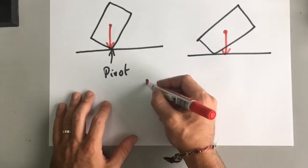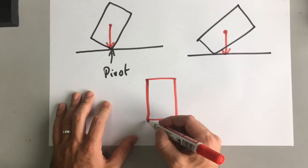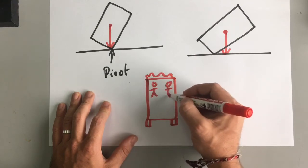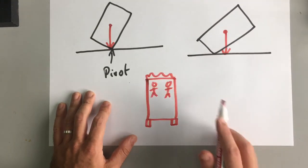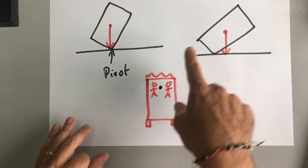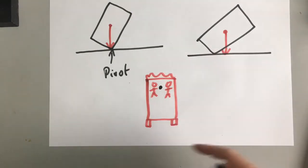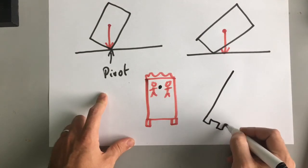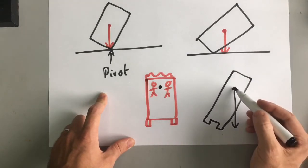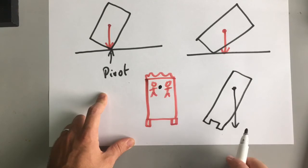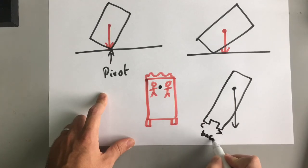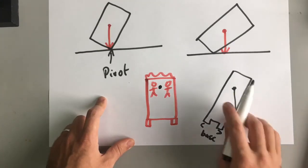The centre of mass is very important when talking about moments because it tells you whether an object will tip over. Think about a double decker bus — if lots of people are at the top, more mass is near the top and the centre of mass is higher up, making it easier to tip over. This vertical line is called the line of action. If the line of action of the centre of mass is outside of the base, the bus will fall over.